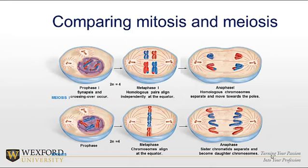Comparing mitosis and meiosis, looking at meiosis one versus mitosis: in prophase one of meiosis, we have synapsis and crossing over occurring — we don't see that in mitosis. In metaphase one of meiosis, the homologous pairs align independently at the equator, while in metaphase of mitosis, the chromosomes themselves line up at the equator. In anaphase one, homologous chromosomes are what separate, while in anaphase of mitosis, the sister chromatids separate.